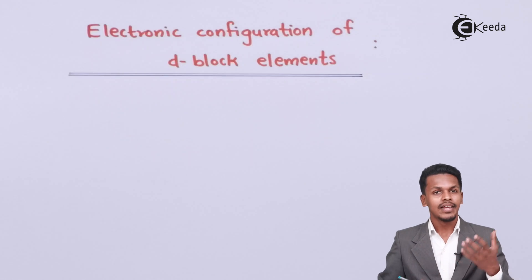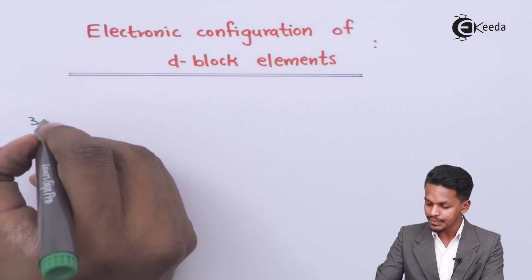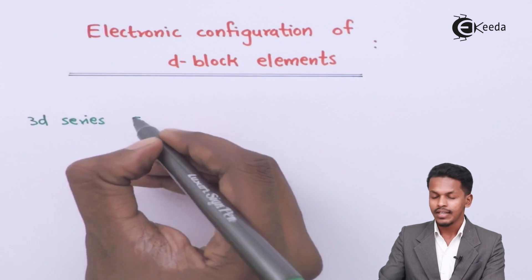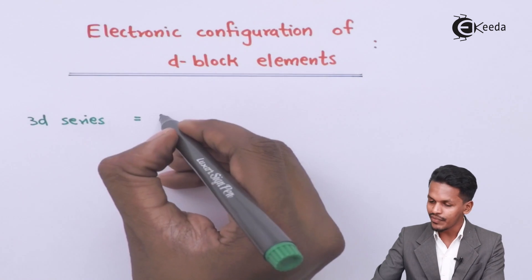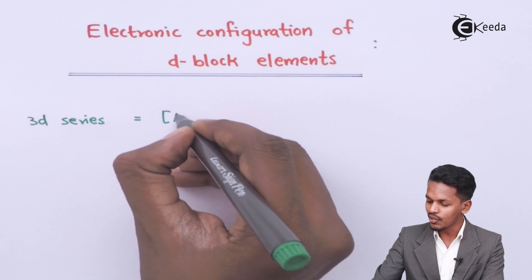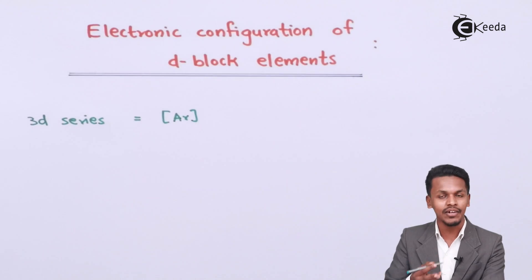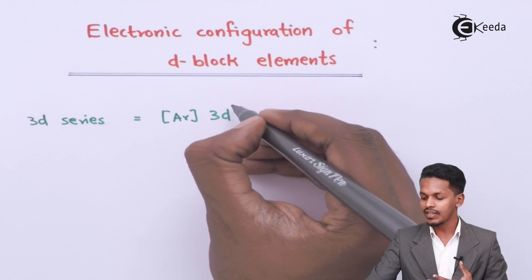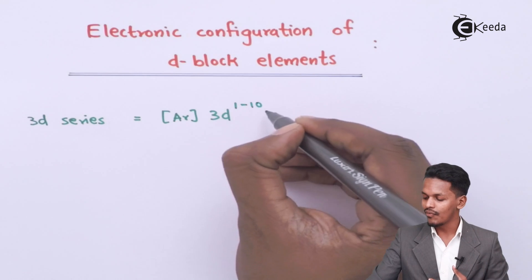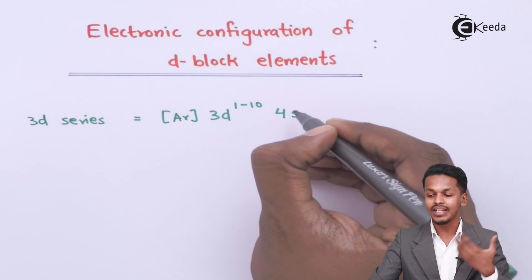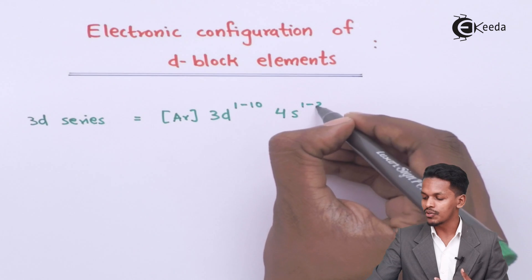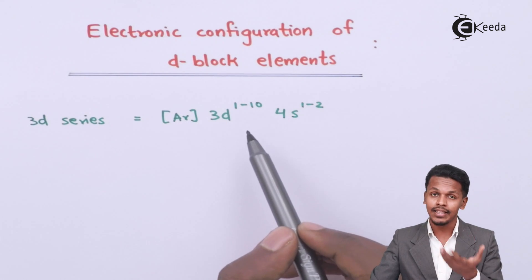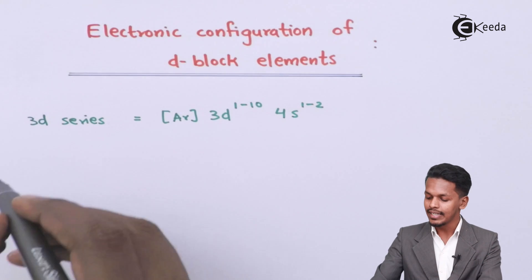Now let us understand the general electronic configuration of these elements. For the 3d series, the general electronic configuration is written as [Ar] 3d¹⁻¹⁰ 4s¹⁻². Argon has 18 electrons, after which electrons fill the 3d orbital (1 to 10 electrons) and the 4s orbital (1 to 2 electrons). I will explain why in the next lecture.